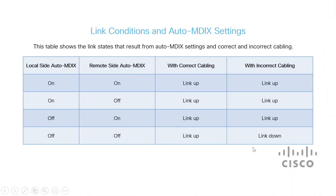This table shows the link states that result from Auto MDIX settings with correct and incorrect cabling. In the first case, Auto MDIX is enabled on both the local and remote sites, so the link will stay up either way.